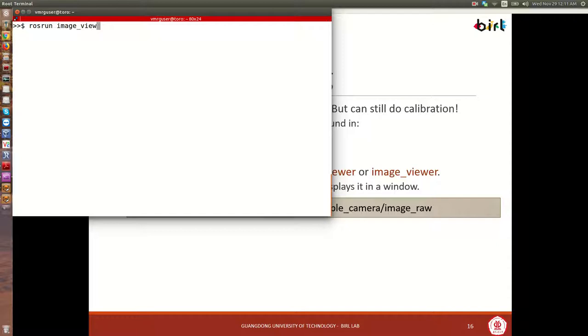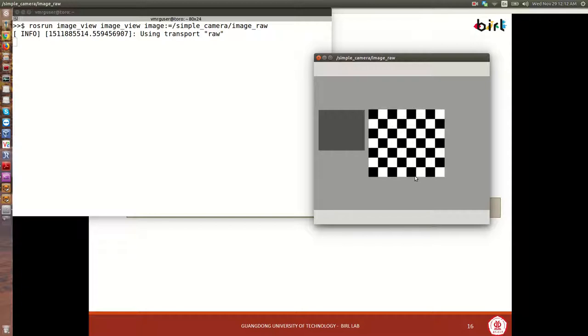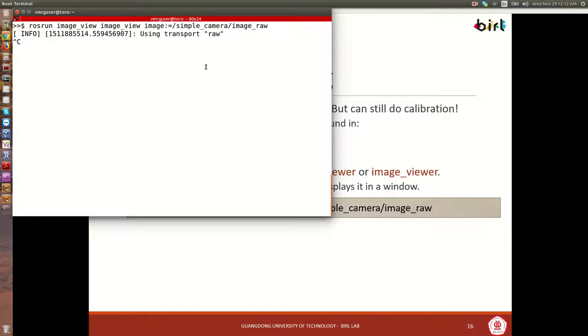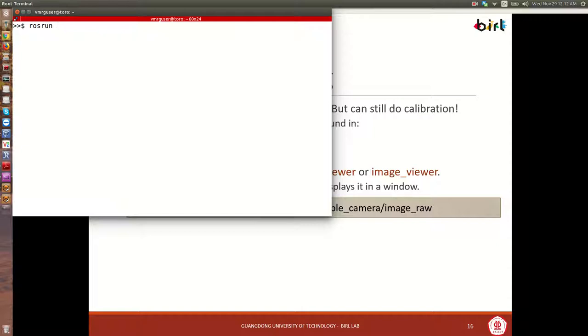Let's come over here, clear the screen. We can say ros run image view image view, and then do the remapping like this, colon equals simple camera image raw, and this will open a window, a simple window like this, and this is what the camera is looking at. This is the checkerboard, this is the light gray color over here is the floor, and then this darker gray square is the shadow of the checkerboard. I can also close this window, run CTRL-C. I should have maybe pressed Q for quit, I am sorry about that.